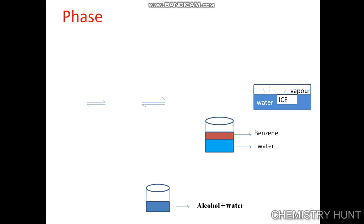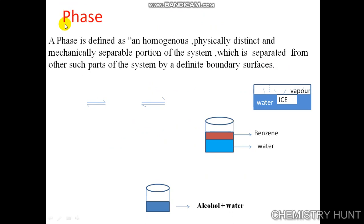Now we will see what is meant by phase. A phase is defined as a homogeneous, physically distinct and mechanically separable portion of the system, which is separated from other such parts of the system by a definite boundary surface.